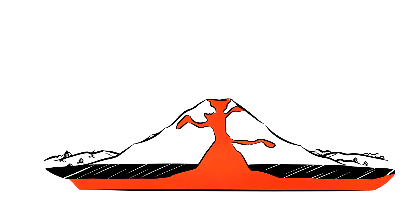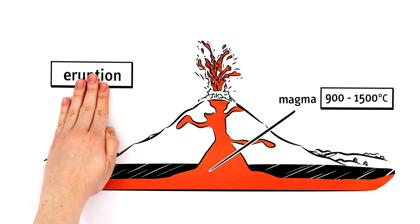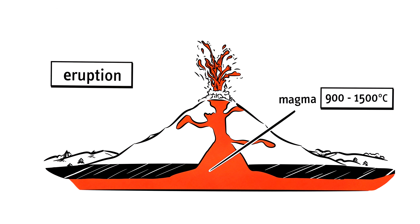When molten rock is found below the Earth's surface, it is known as magma and is between 900 and 1500 degrees Celsius. When the volcano bursts open, which is known as an eruption, we call the hot mass above ground lava.